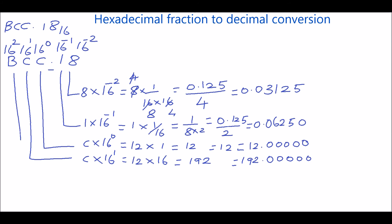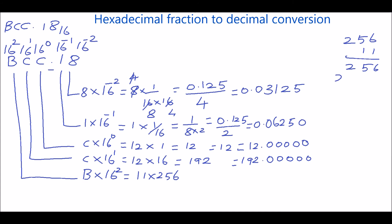Then take the next digit B. B into 16 power 2. The value of B is 11. So 11 into 256. Doing the multiplication: 256 into 11 gives 2816. So it can be written as 2816.0000.